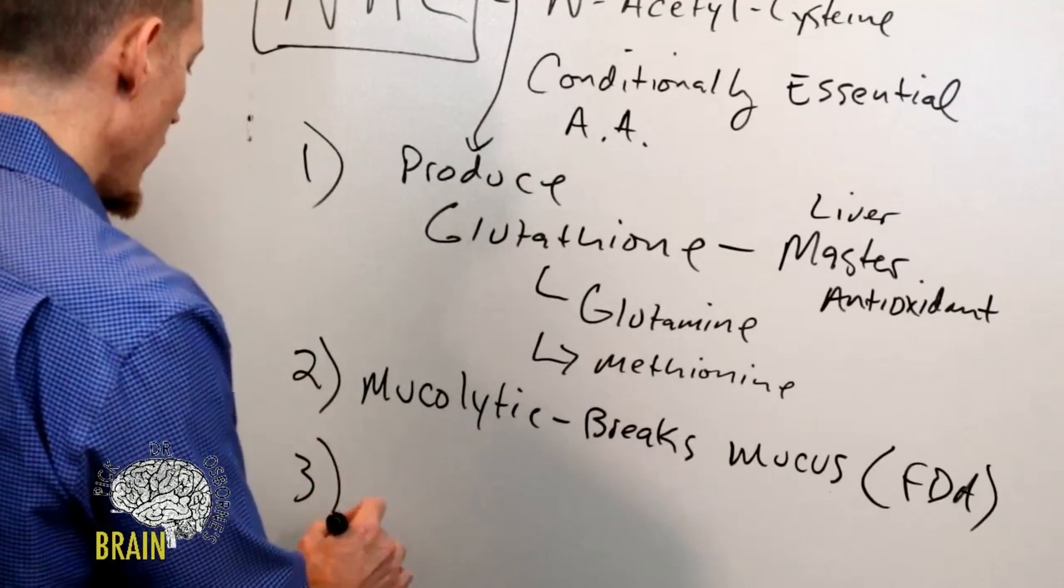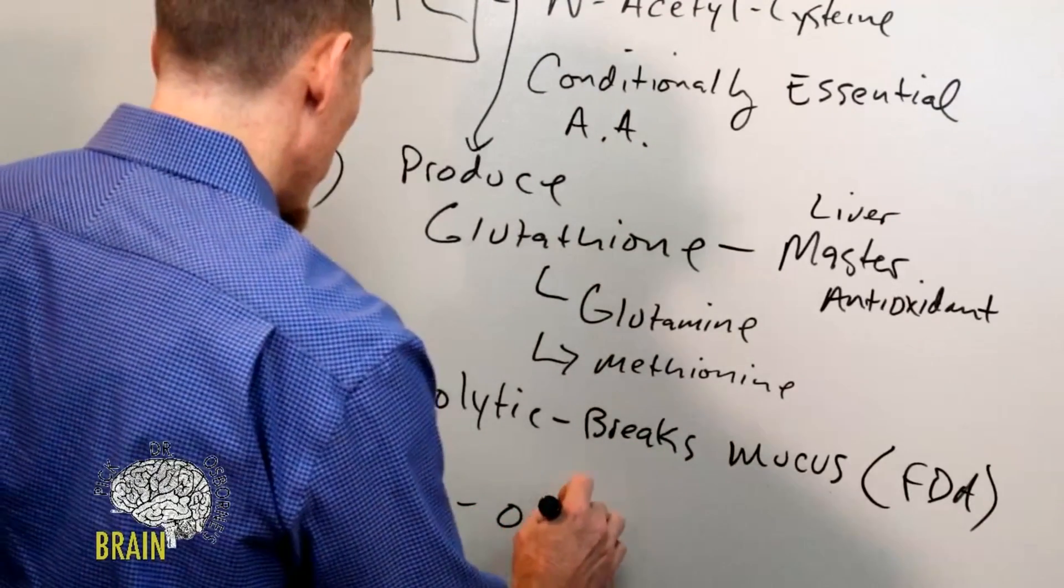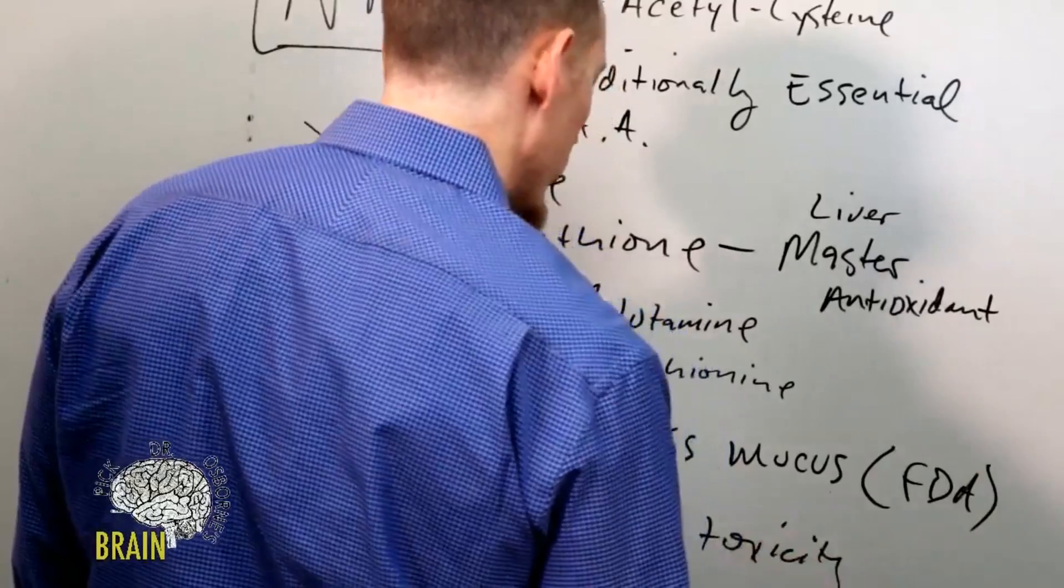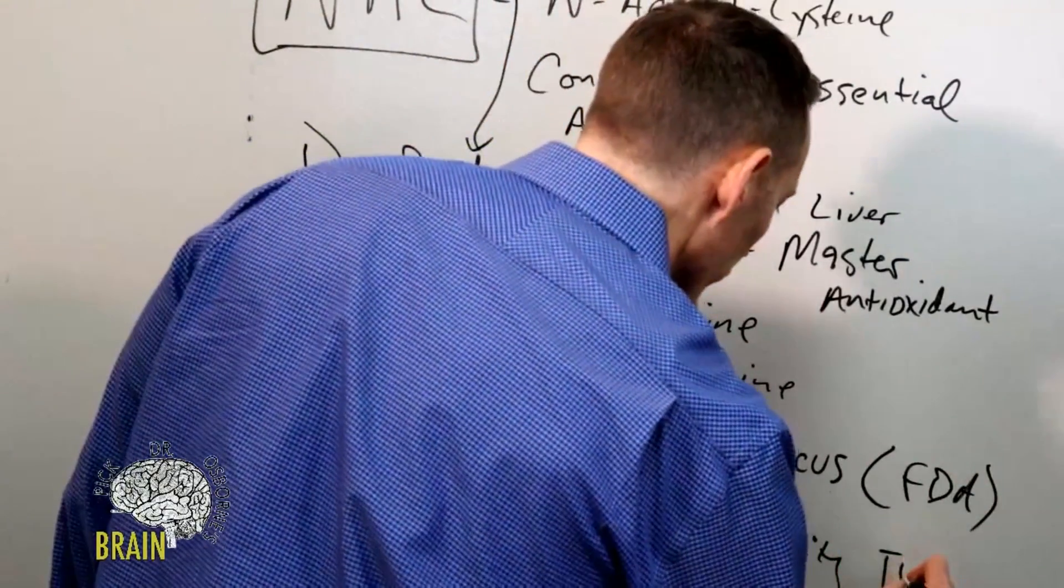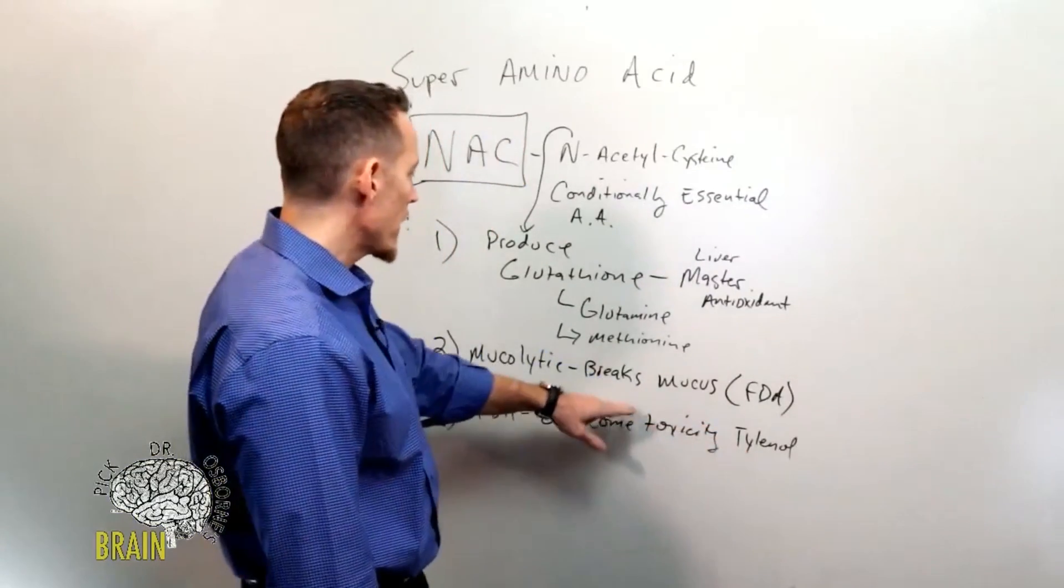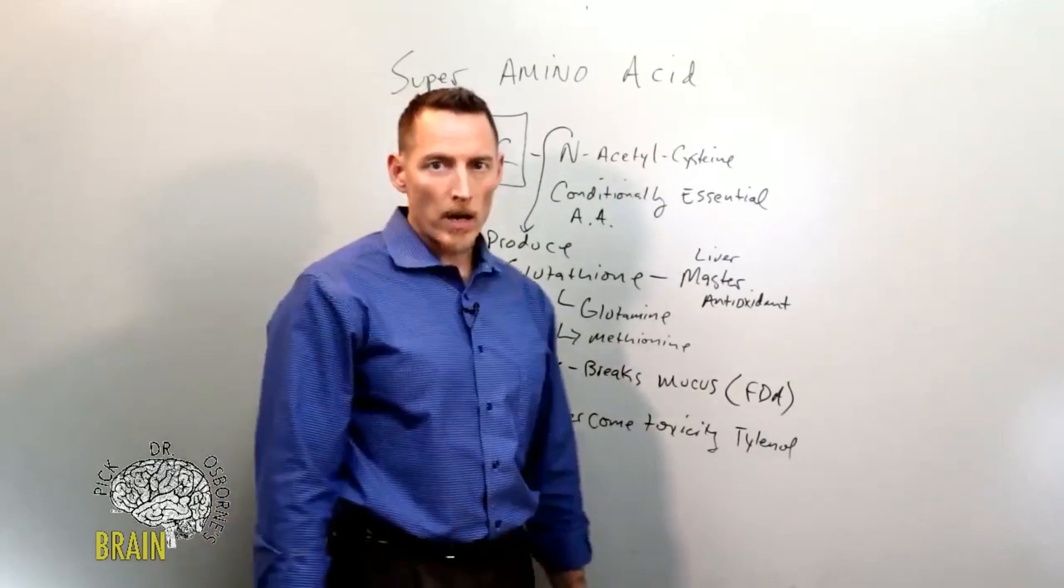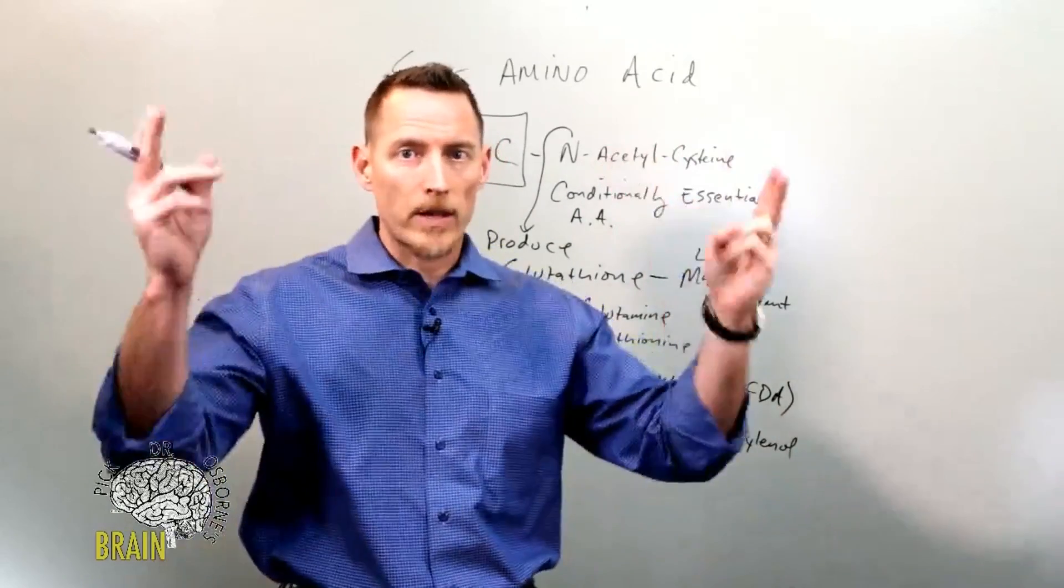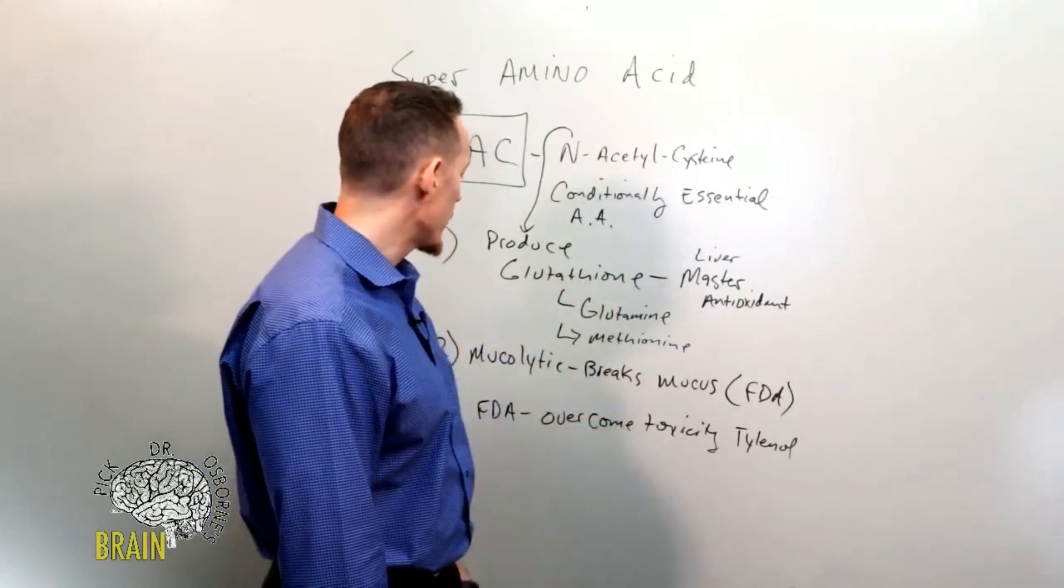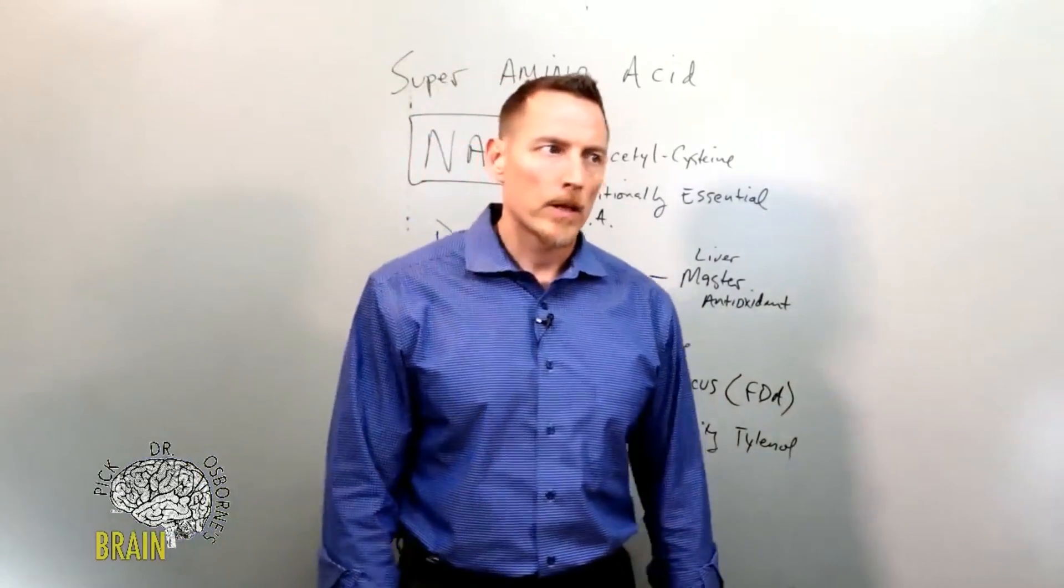Now, additionally, it's also FDA approved for this, which is to overcome toxicity of Tylenol or acetaminophen. In hospitals, when somebody overdoses on Tylenol, they use N-acetylcysteine to stop that toxicity from doing further damage. It's an FDA approved drug in hospitals to treat Tylenol toxicity or acetaminophen toxicity. So these are three really important functions of N-acetylcysteine.